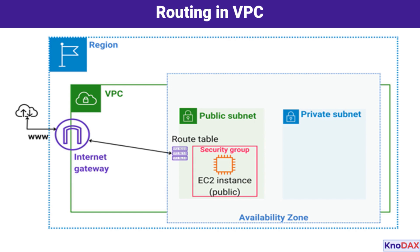Let's summarize what this diagram shows: a region that houses the VPC, an Internet Gateway connected to the VPC, a public subnet with a route table directing traffic to the Internet Gateway, a private subnet without Internet access by default, and an EC2 instance within the public subnet capable of communicating with the Internet. This setup highlights how AWS provides precise control over resource communication within and beyond the VPC. By carefully configuring route tables and gateways, you can design secure and scalable network architectures that meet the specific needs of your applications.